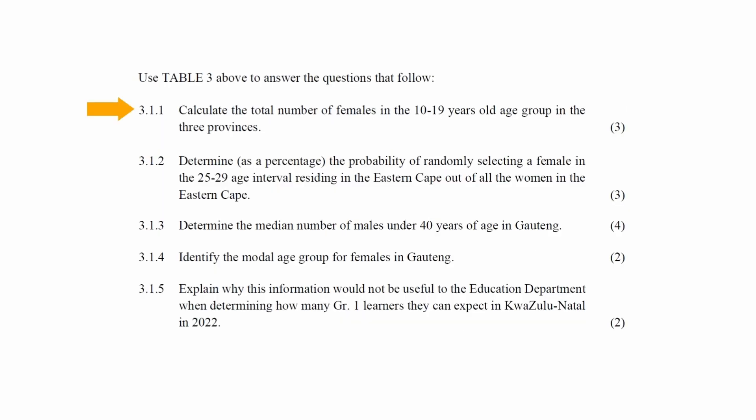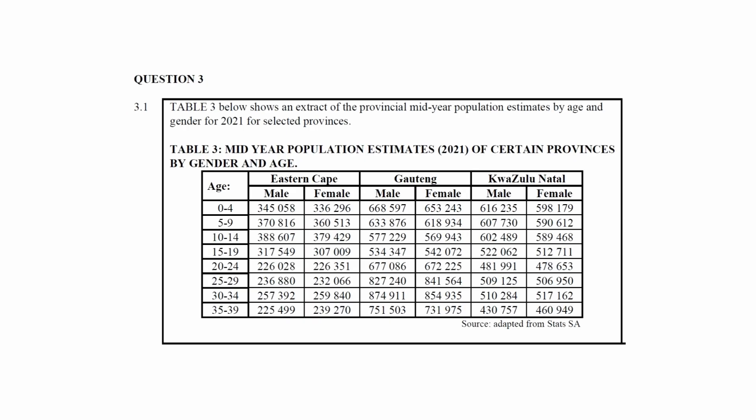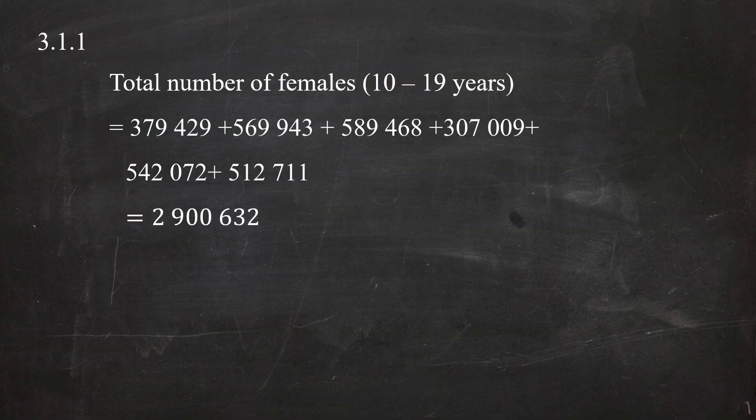In question 3.1.1, you are instructed to calculate the total number of females in the 10 to 19 age group in the three provinces. From the table, the age group 10 to 19 is given by these cells, so the total number of females in this age group is the sum of these values, giving a total of 2,900,632.